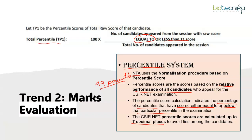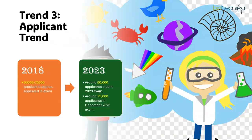Ideally, if we see the previous pattern, around 60% should be your target. Trend number three is the applicant trend — the number of applicants who have appeared in the exam. In 2018, before the pandemic, around 65,000 to 70,000 applicants approximately appeared in the exam. Whereas in 2023, there were 80,000 applicants in the June exam and 75,000 applicants in the December exam. There has clearly been an increase in the number of applicants, meaning more competition every session.